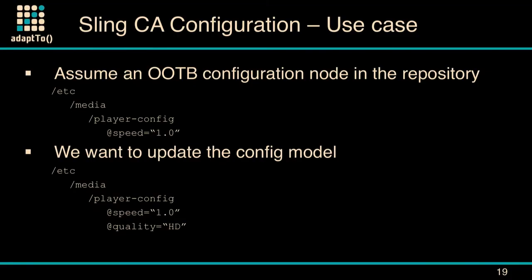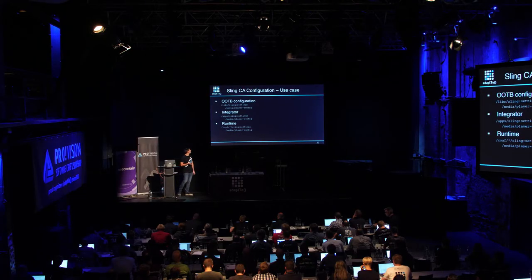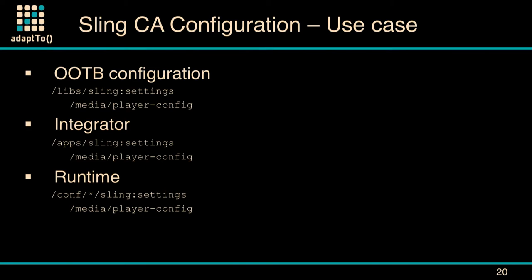That configuration may already have been changed — the speed property might already be changed by either the customer, integrator, DevOps, or there may already be runtime changes made by users. Simply installing or overwriting this on update isn't safely possible. The answer would be using Sling context-aware configs. We can leverage Sling context-aware configurations, which will allow us to properly separate the concerns of what we're shipping. We have an out-of-the-box configuration in libs.